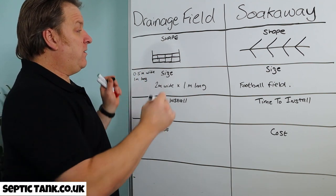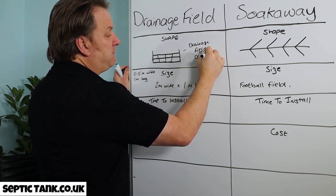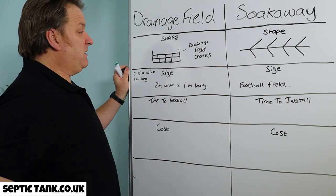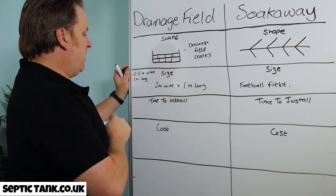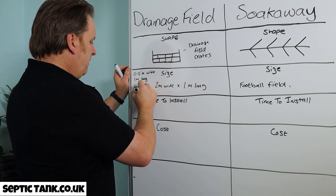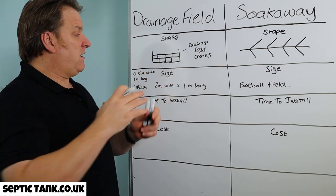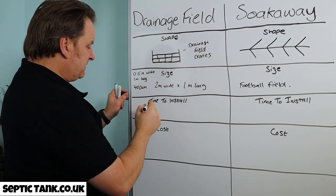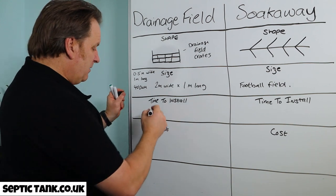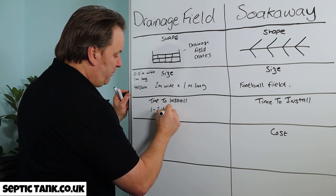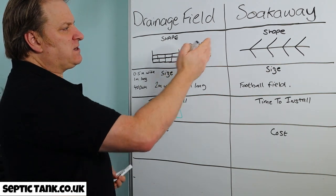How long does it take to install a drainage field with drainage field crates? These crates are 400mm deep — I should have mentioned that earlier. In many cases you can just have a single level. Typically you're looking at about 400mm depth. How long does it take to dig that? Let's be conservative — one to two hours. That's the time it takes to install drainage field crates.